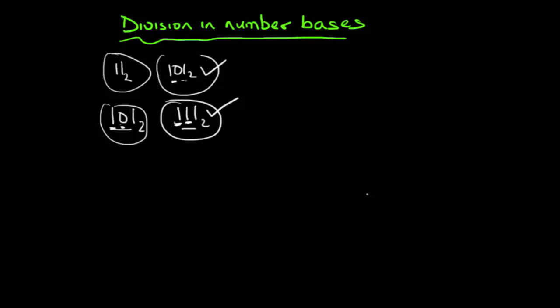Let's take one more. If I have '110' and '101', which is bigger? Both have three digits, so we take it digit by digit. First digit: one vs one. Second digit: one vs zero — one is bigger, so '110' is bigger. I hope you understand, because division in number base needs you to understand these simple concepts first.